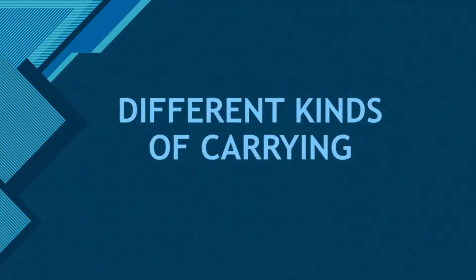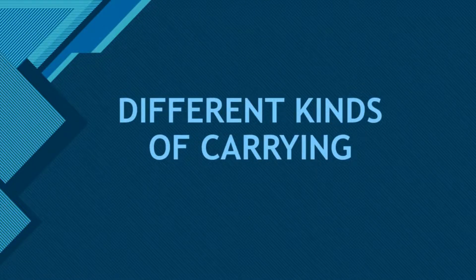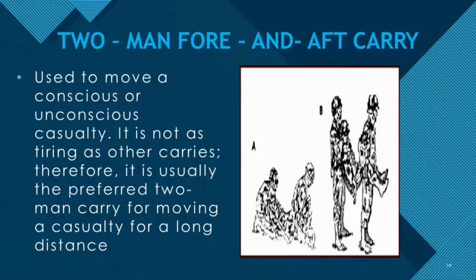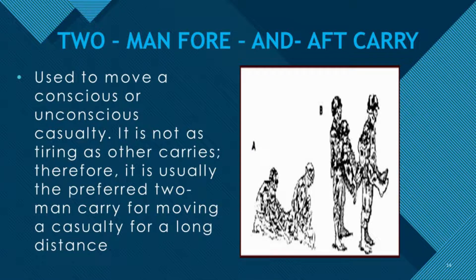The next type of carry is what we call two-man carry, and there are different kinds. The first is what we call two-man fore and aft carry, used to move a conscious or unconscious casualty. It is not as tiring as the other carries; therefore, it is usually the preferred two-man carry for moving a casualty a long distance. Among all the two-man carries, this is the recommended one for long-distance transport.